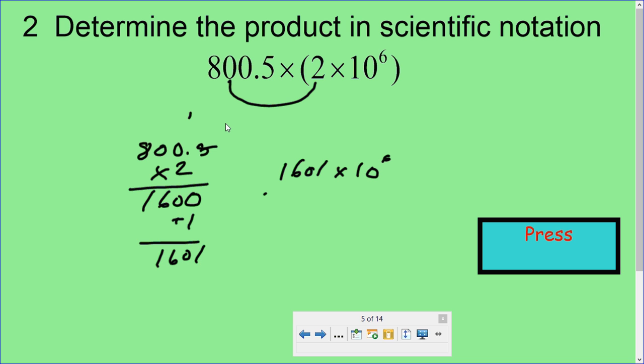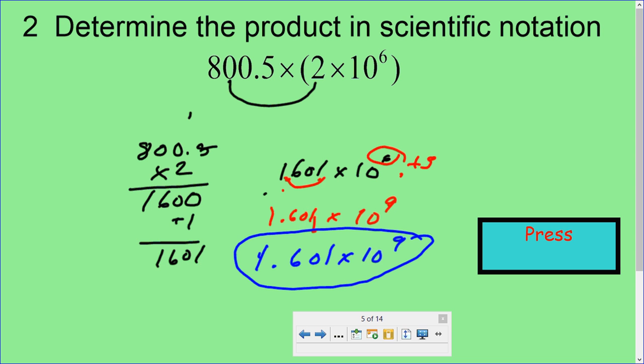But that's not scientific notation because I need to have a decimal point right there. If I have my decimal point at the end of that, that means I moved it over three spaces. And that makes this number smaller: 1.601. So that means I've got to make the exponent, which is 6, larger by adding on the number of places I moved the decimal point. So that would give me 10 to the ninth power. So my answer in scientific notation would be 1.601 times 10 to the ninth power.